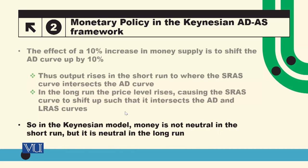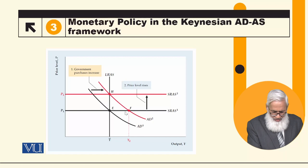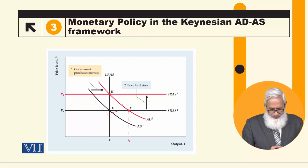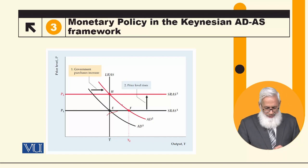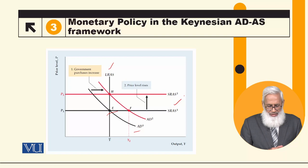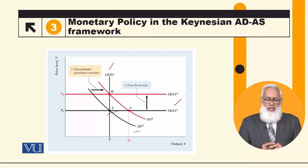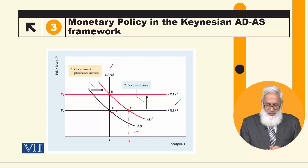In the short-run diagram, the initial economy is at point E. Point E is where the aggregate demand curve, the long-run aggregate supply curve, and the short-run aggregate supply curve all intersect — these three intersections give us the equilibrium, both the general equilibrium and short-run equilibrium. When money supply increases, the aggregate demand curve will shift upward.